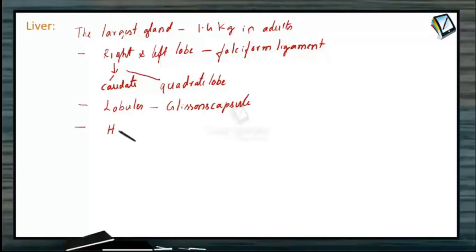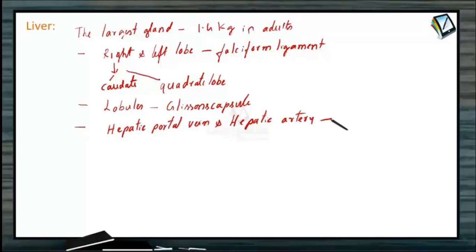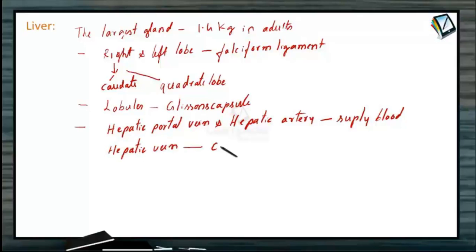The hepatic portal vein and hepatic artery supply blood to the liver, whereas the hepatic vein collects blood from the liver.